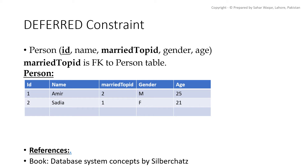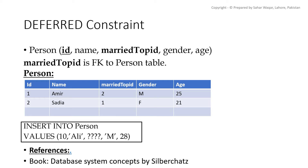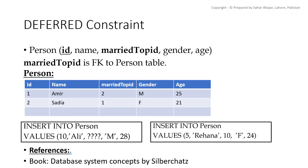If you want to add a tuple — say, a person named Ali — but he is married to Rihanna, which is not added yet, then no matter if we add Rihanna first or Ali first, there is a foreign key violation. So we need to defer our constraint checking until both insert statements are executed.